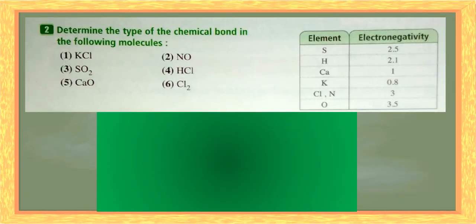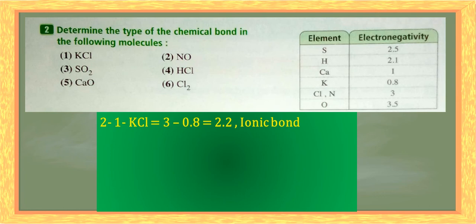Now we determine the type of chemical bond in the following molecules using electronegativity differences. Number one: potassium chloride KCl — difference is 3 minus 0.8 equals 2.2 — ionic bond with the highest electronegativity difference, giving high melting and boiling point. Number two: N and O — difference is 3.5 minus 3 equals 0.5 — polar covalent bond. Number three: SO2 — difference is 3.5 minus 2.5 equals 1.0 — polar covalent bond.